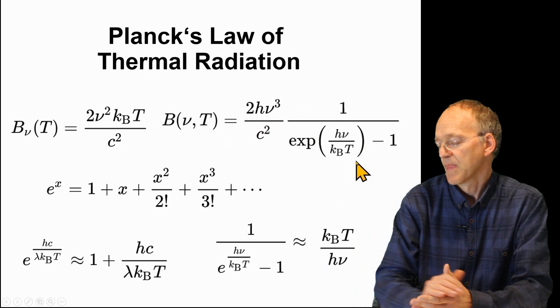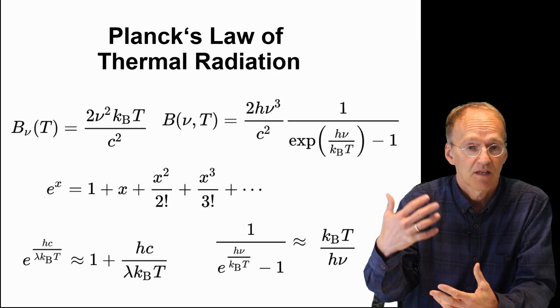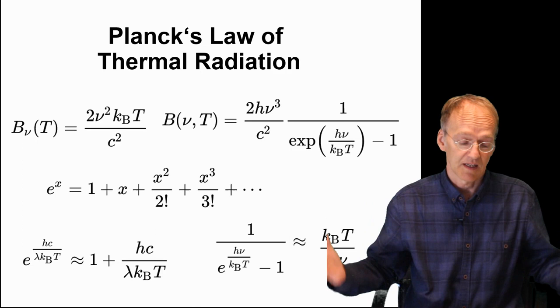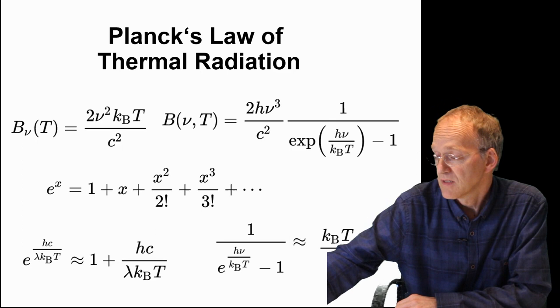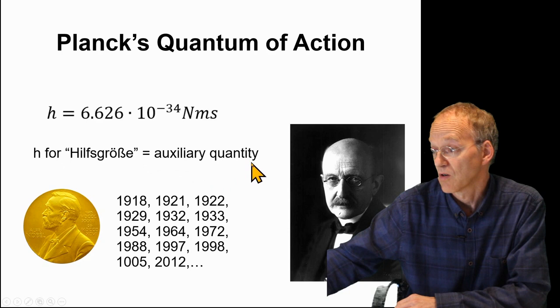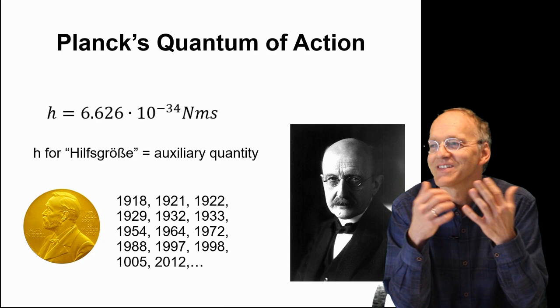He had help from experimentalists who gave him the latest information about black body radiation being investigated in Berlin, and he succeeded in setting up this law which was the foundation of quantum mechanics. Why? Because this tiny constant appears here, h, and he modestly called it h for Hilfsgröße, auxiliary quantity, because he did not believe in its significance. That's very interesting.